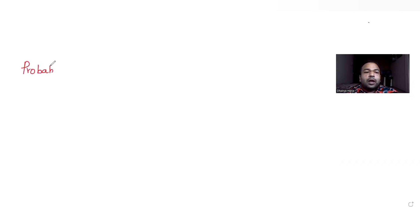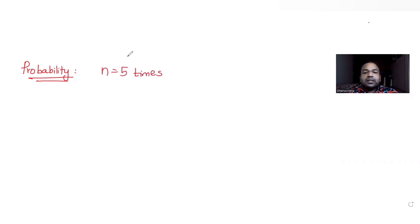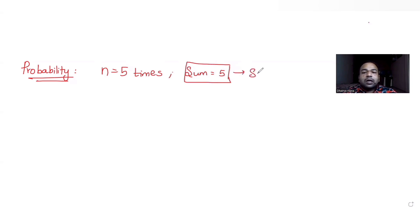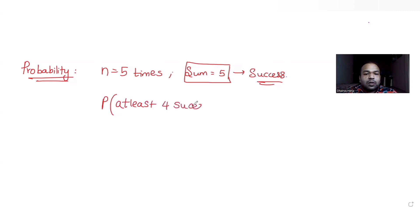Today's question is from the topic of probability. A pair of dice is thrown five times. For each throw, a total of five is considered to be a success — so the sum of five should come when you throw two dice. We have been asked the probability of at least four successes, which is given as K upon 3 raised to 11, and we need to find the value of K.